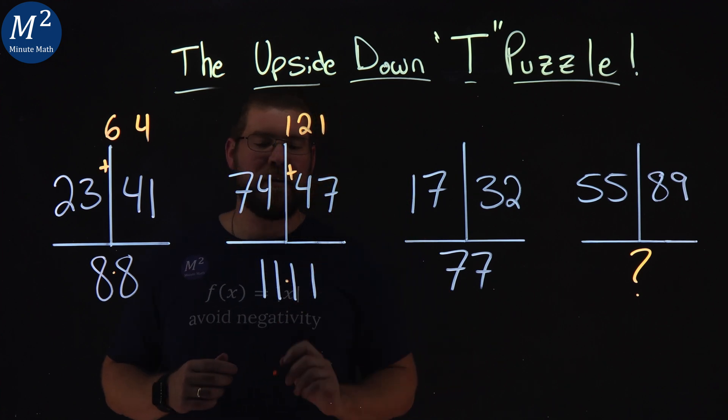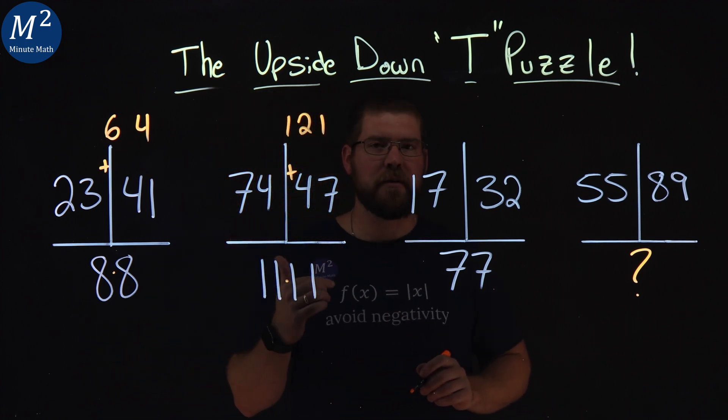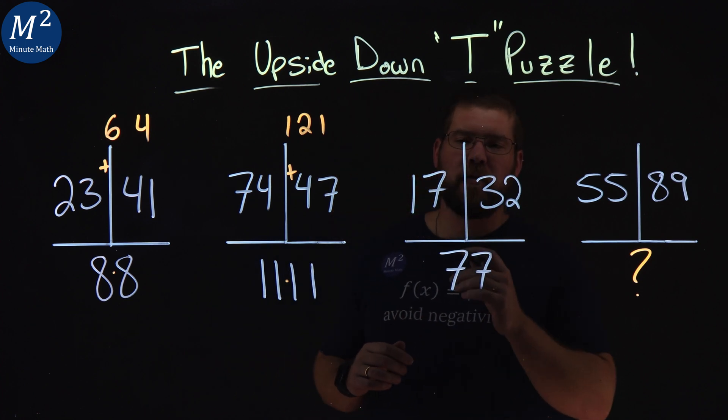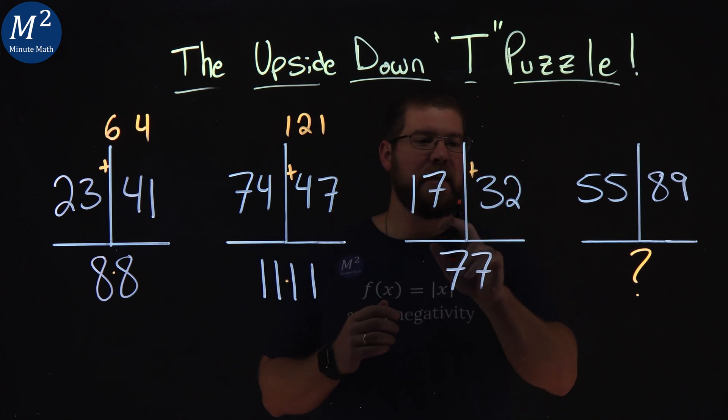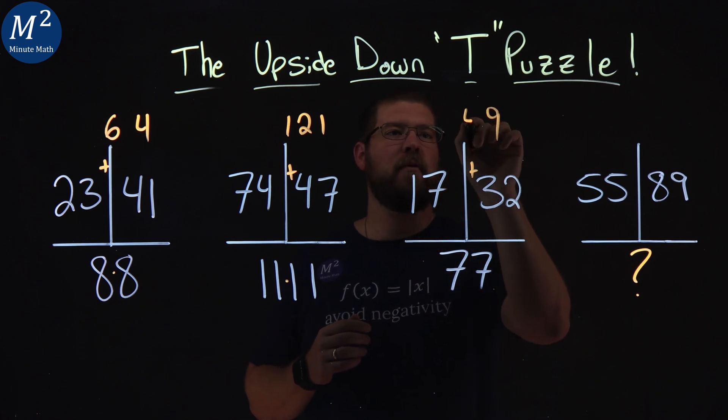121 is 11 times 11. I think we have a pattern here. Let's go to the next one here. 17 and 32. 7 and 2 make a 9. 3 and 1 make a 4.